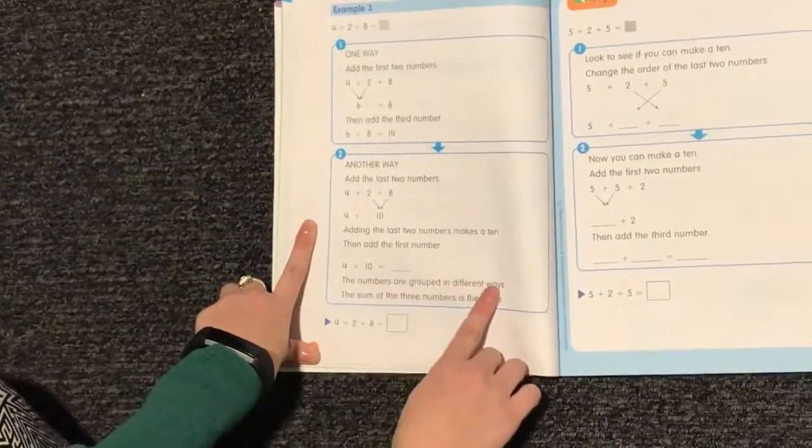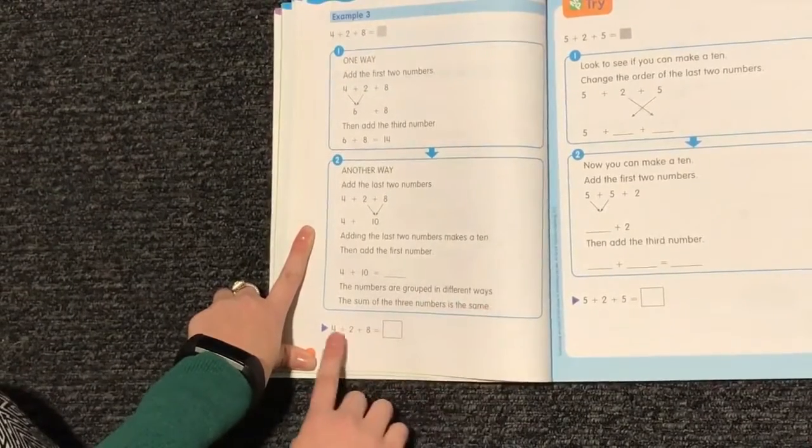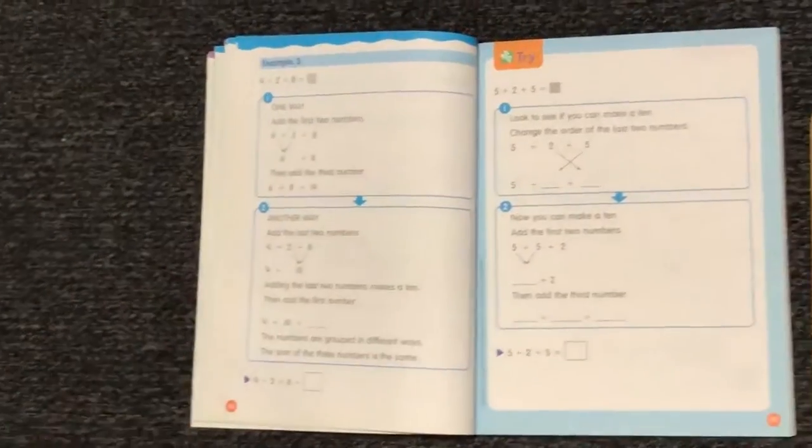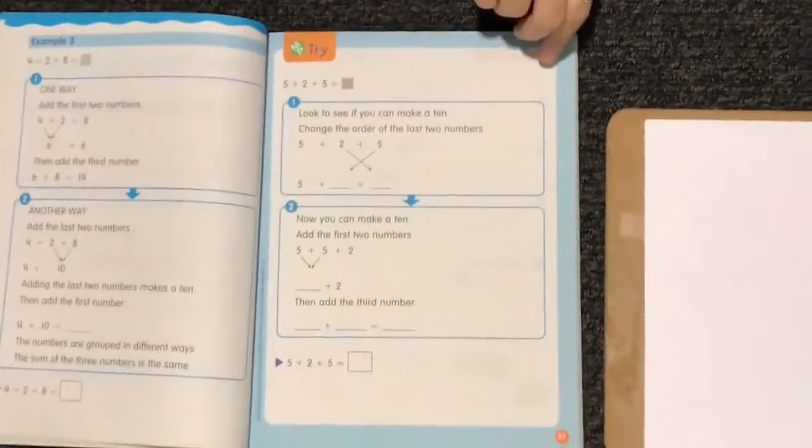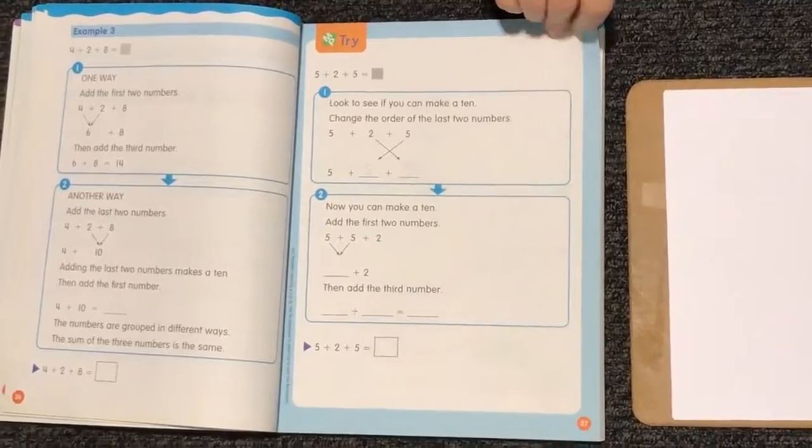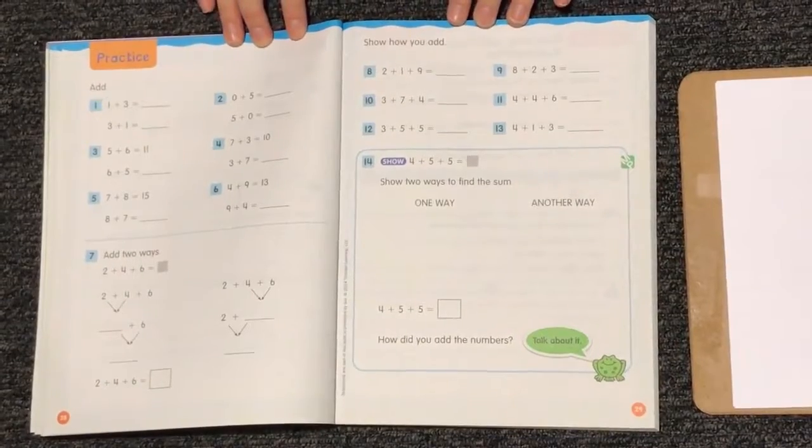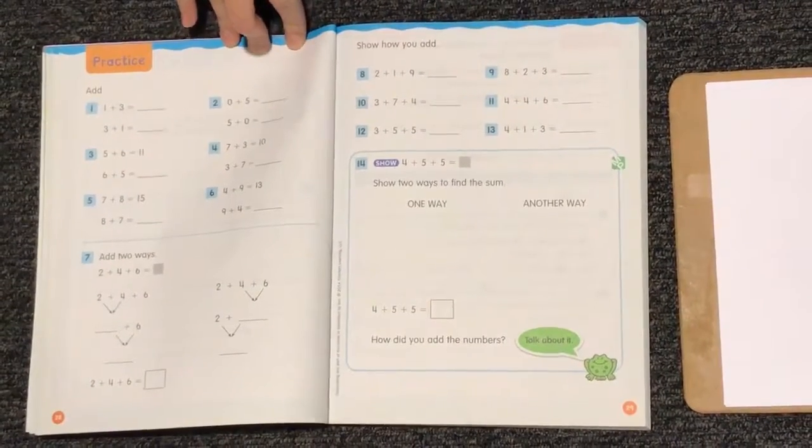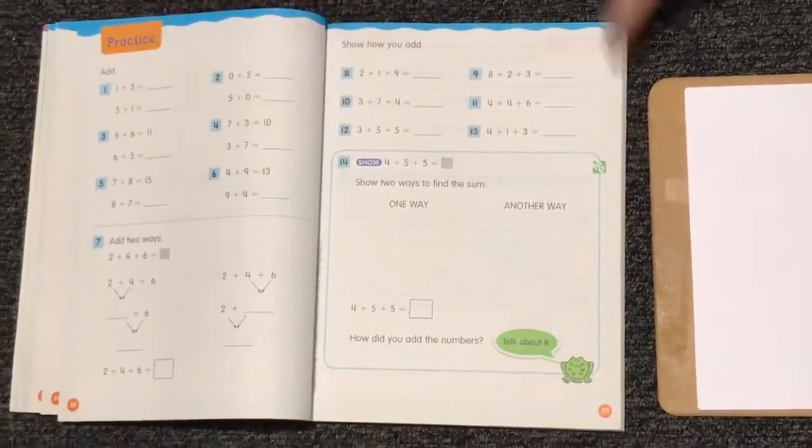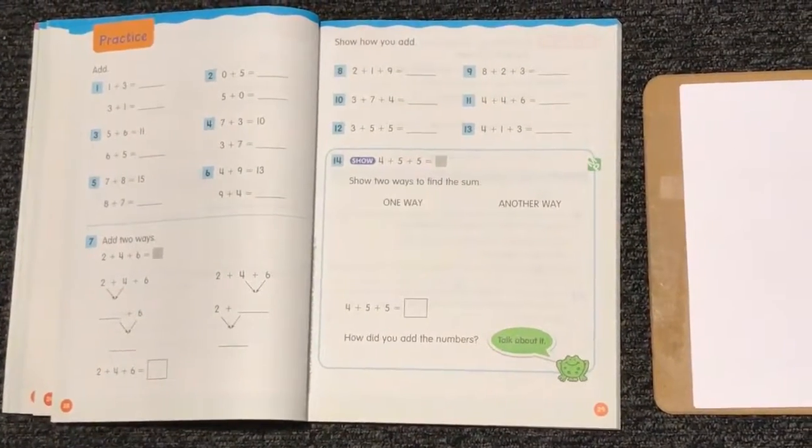The numbers are grouped in different ways, but the sum or answer of the three numbers is the same. So 4 plus 2 plus 8 equals 14. All right, so next you're going to do this challenge page where you're going to practice what we just learned. And after that you're going to turn the page and do the rest of the practice problems on your own. And if you are confused, please pause your video, go back to the beginning. That way you can listen to those examples again to help you with these practice problems. You're going to stop at the little frog and that means you're done with today's lesson. Check back tomorrow for lesson 5.